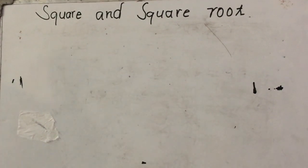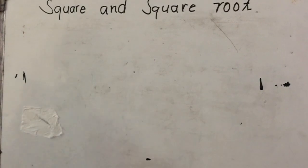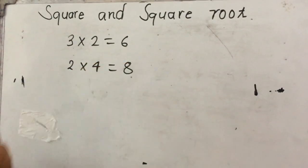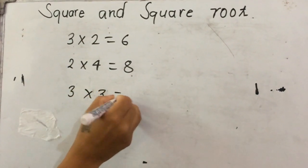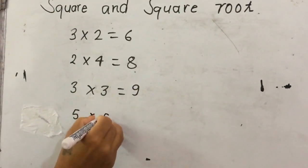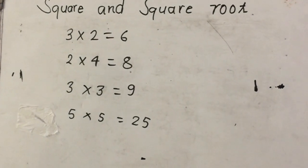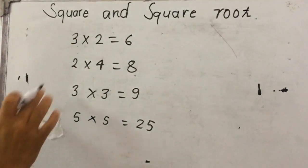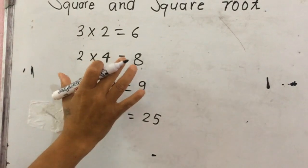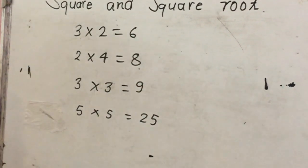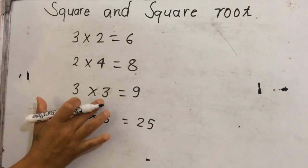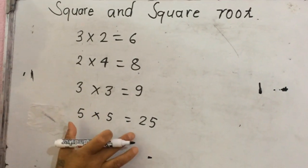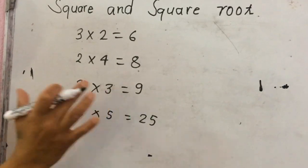Hi friends, welcome to our lesson on square and square root. Let's have a look at these examples: 3 times 2 is 6, 2 times 4 is 8, 3 times 3 is 9, and 5 times 5 is 25. Here, 6 is the product of 3 and 2. For 8, the factors are 2 and 4. For 9, the factors are both 3. And 25 is the product of 5 and 5.